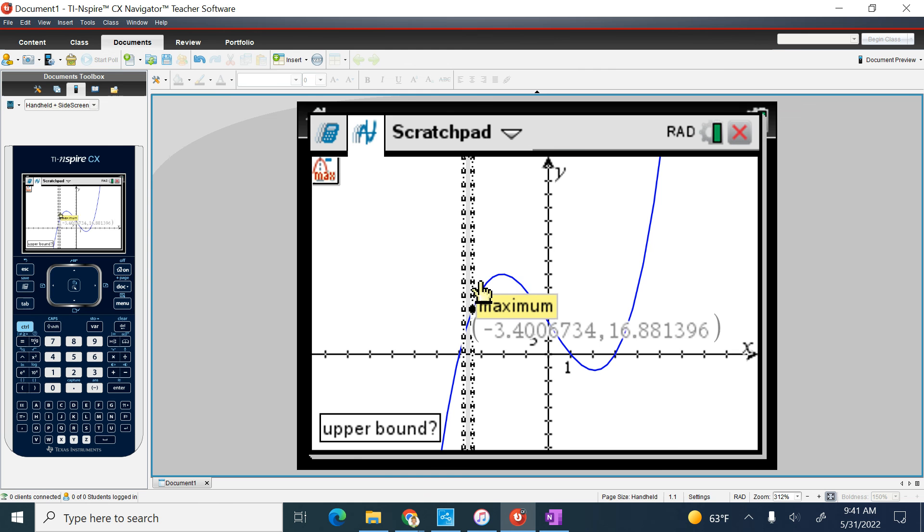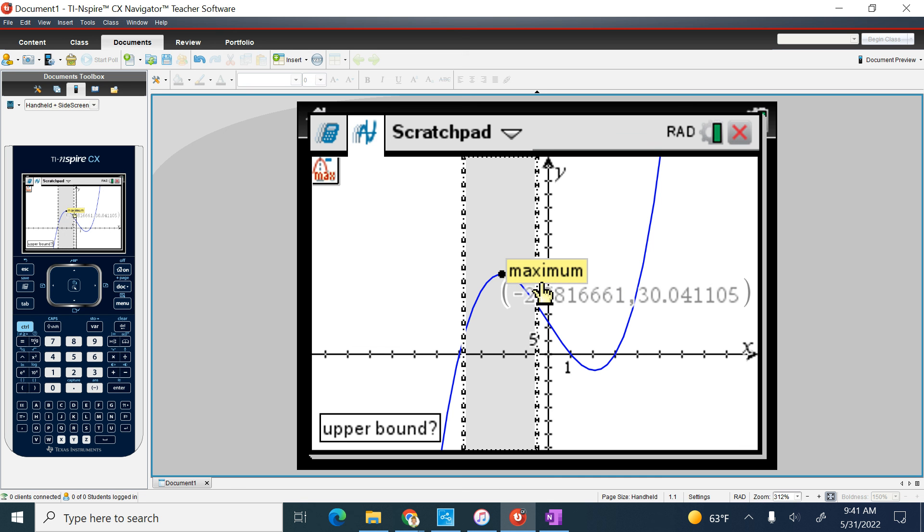I'm going to, it says upper bound, so I'm going to keep going until that word maximum stops. See how it was moving, moving, moving, and then it stopped. So that's got to be my relative maximum.